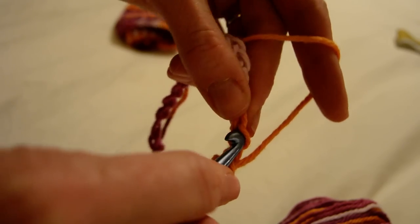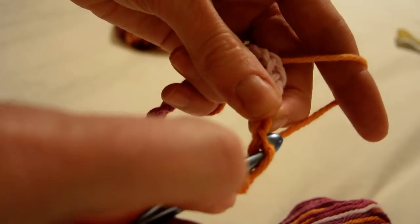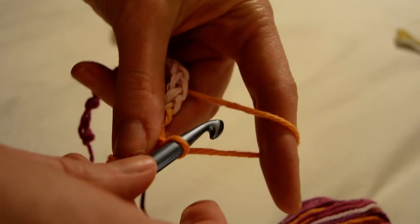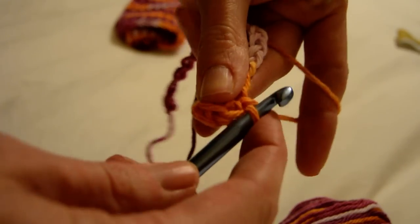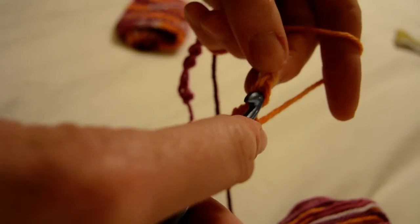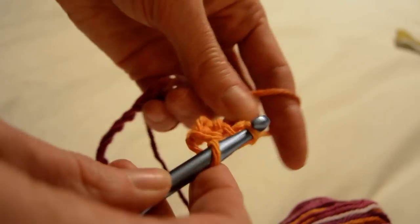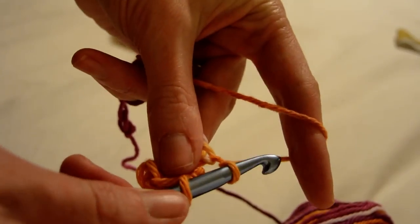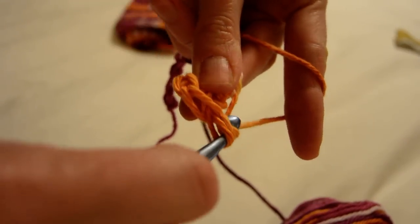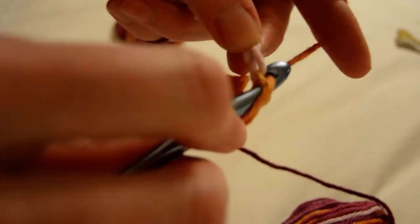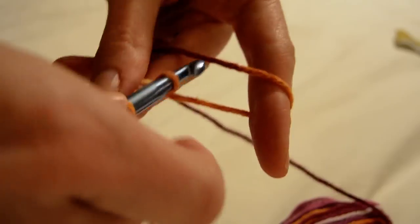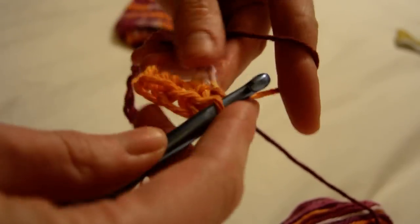Go in the next space, grab the yarn, pull through. You have two on your hook, pull through two. Go in the next space, pull through, two on my hook, pull through two. Then we just do that all the way across until we get to the end.